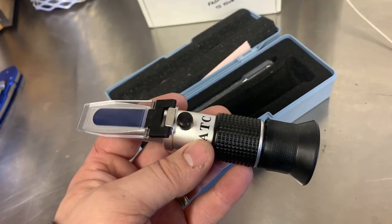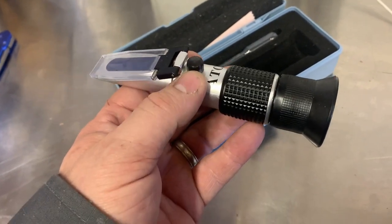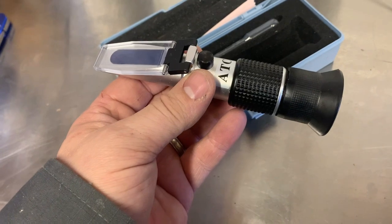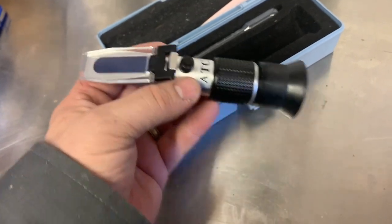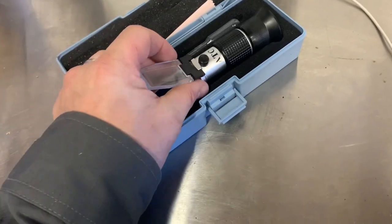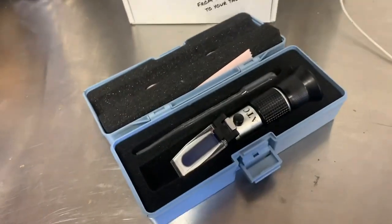You have to calibrate it to make sure that it's set, so the way to do that is you can use oil or water to test it. We're going to also show you what it looks like when we test our honey.